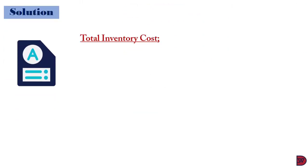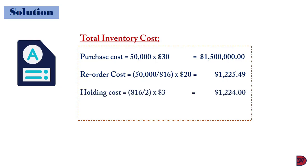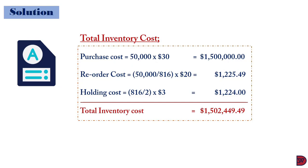When we come to establishing the total inventory cost: the purchase cost for 50,000 computers at $30 gives $1,500,000. The reorder cost will be 50,000 divided by 816, giving the number of orders, multiplied by the order cost of $20, giving $1,225.49. The holding cost is the order quantity of 816 divided by 2, giving the average inventory, multiplied by $3 (the holding cost per unit), giving $1,224. This results in a total inventory cost of $1,502,449.49.